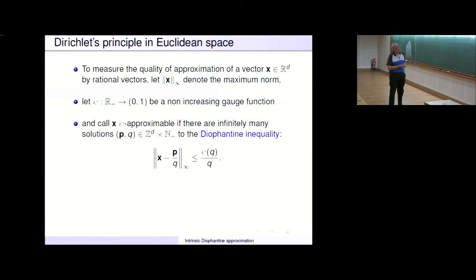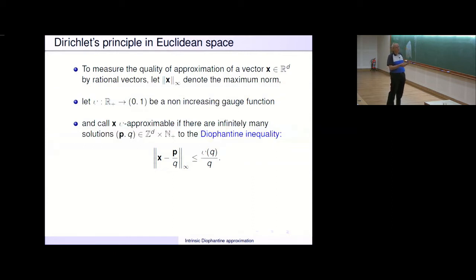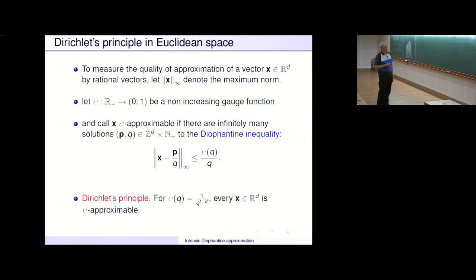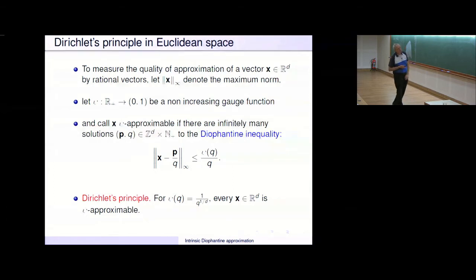For example, if psi(Q) = 1/Q^{1/d}, then every X in R^d is psi-approximable. A lot of the interest is in functions psi with as many logarithms as possible. It is clear that X is psi-approximable if and only if it belongs to cubes with center P/Q and edge size 2·psi(Q)/Q infinitely often. The measure of each such cube is (2·psi(Q))^d / Q^d.